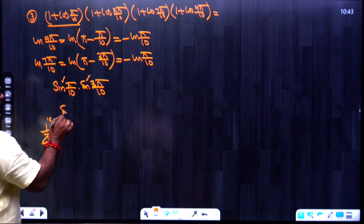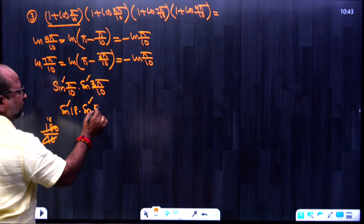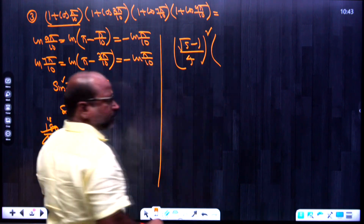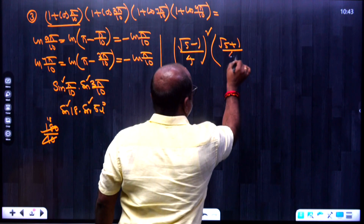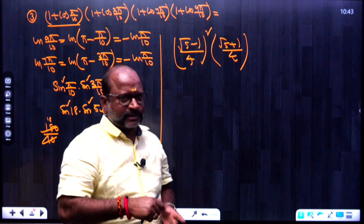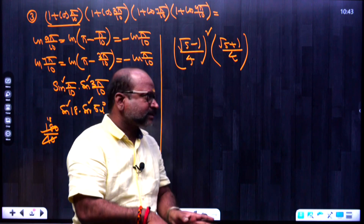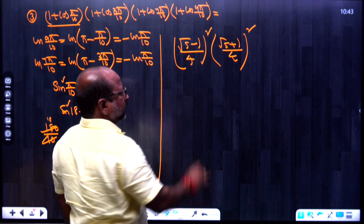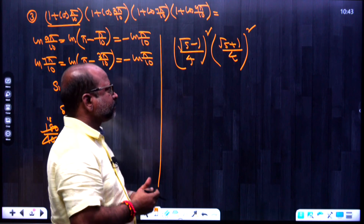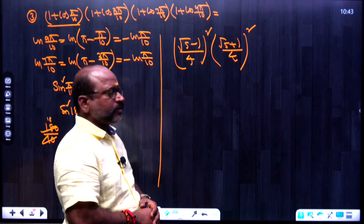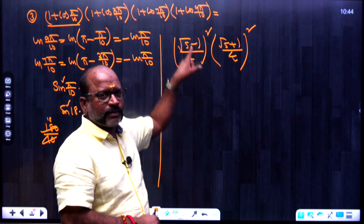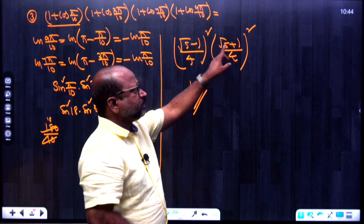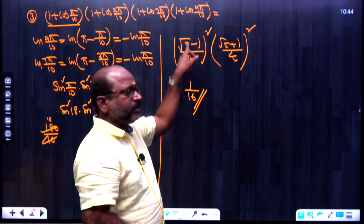We get sin²(18°) × sin²(54°). The value of sin 18° = (√5 - 1)/4, and sin 54° = cos 36° = (√5 + 1)/4. Squaring and applying (A - B)(A + B) = A² - B², we get (√5)² - 1² = 5 - 1 = 4, divided by 4² = 16, giving 4/16 = 1/16.